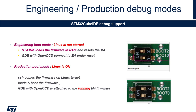The engineering mode is used to develop your firmware when you don't need interactions with the A7 part. It can also be used at the beginning to start your development.